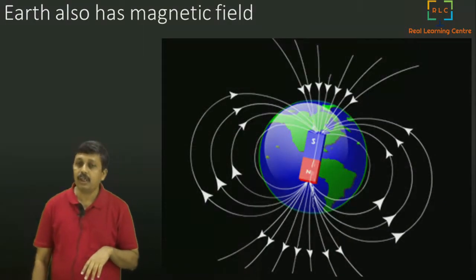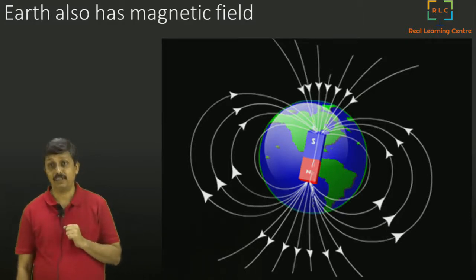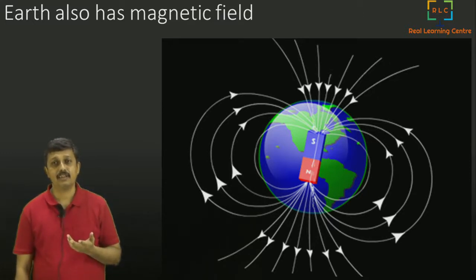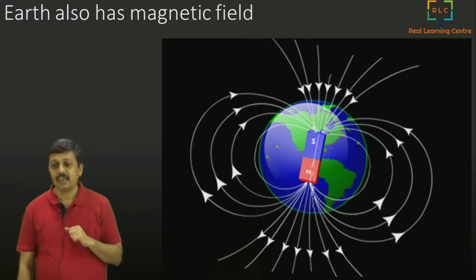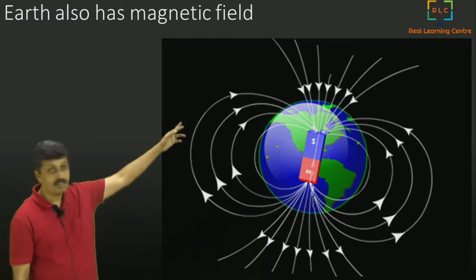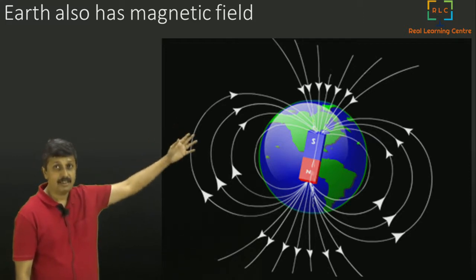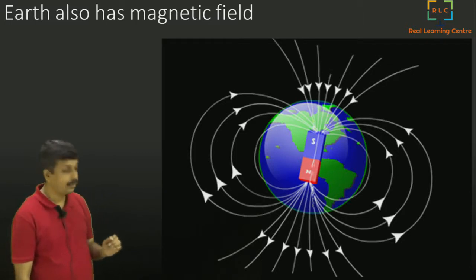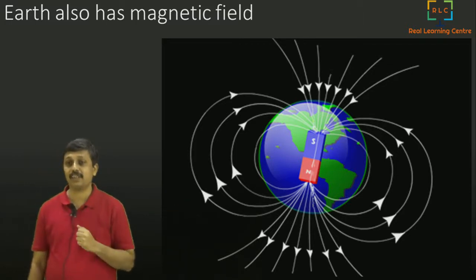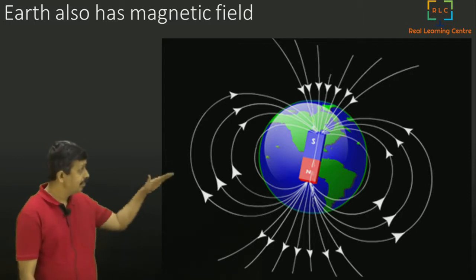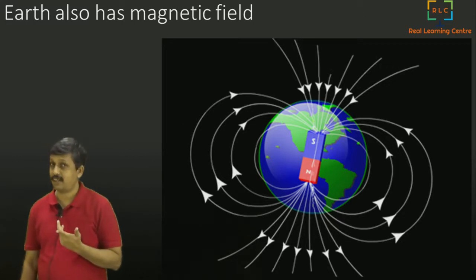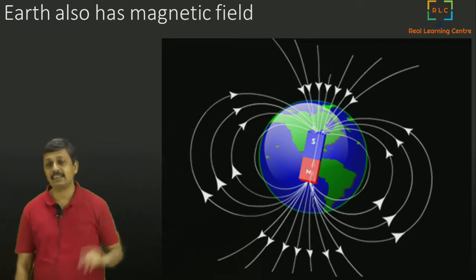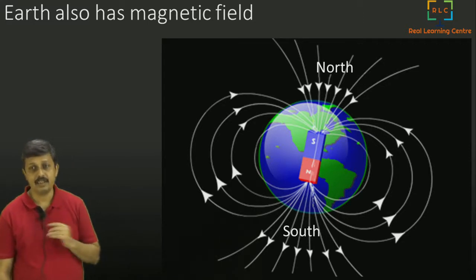Earth also has a magnetic field. That is why when you keep a compass needle on a table it shows the direction of north. Earth's magnetic field is such that what we call the geographic north pole has the south pole of the internal magnet, and the geographic south pole has the north pole of the internal magnet. That is why the compass needle shows geographic north — it is actually showing the magnetic south.